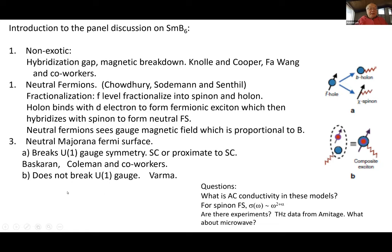An important point is the neutral fermion sees a gauge magnetic field which is proportional to B, but then the quantum oscillation period would in general not be the same as what you expect in the charge case. Finally, there are several papers that talk about neutral Majorana fermions—these are getting more and more exotic. The original discussions by Baskaran and by Coleman break U(1) symmetry because we associate Majorana with superconductivity. There's a recent paper by Chandra Varma which doesn't break U(1) symmetry. I'd like to know what is the AC conductivity of these models. I know the answer for the neutral fermion case is a power law. Are there similar predictions for Majorana? Are there experiments? Yesterday I saw some terahertz data from Armitage, but it would be really interesting to go down to microwave.